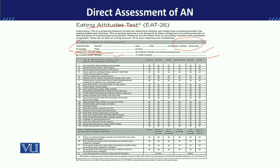Inside the questionnaire, different kinds of questions will be asked. The rating scale for each item includes: Always, Usually, Often, Sometimes, Rarely, and Never. Wherever the client feels that an item refers to their activity, they will place a tick mark there.